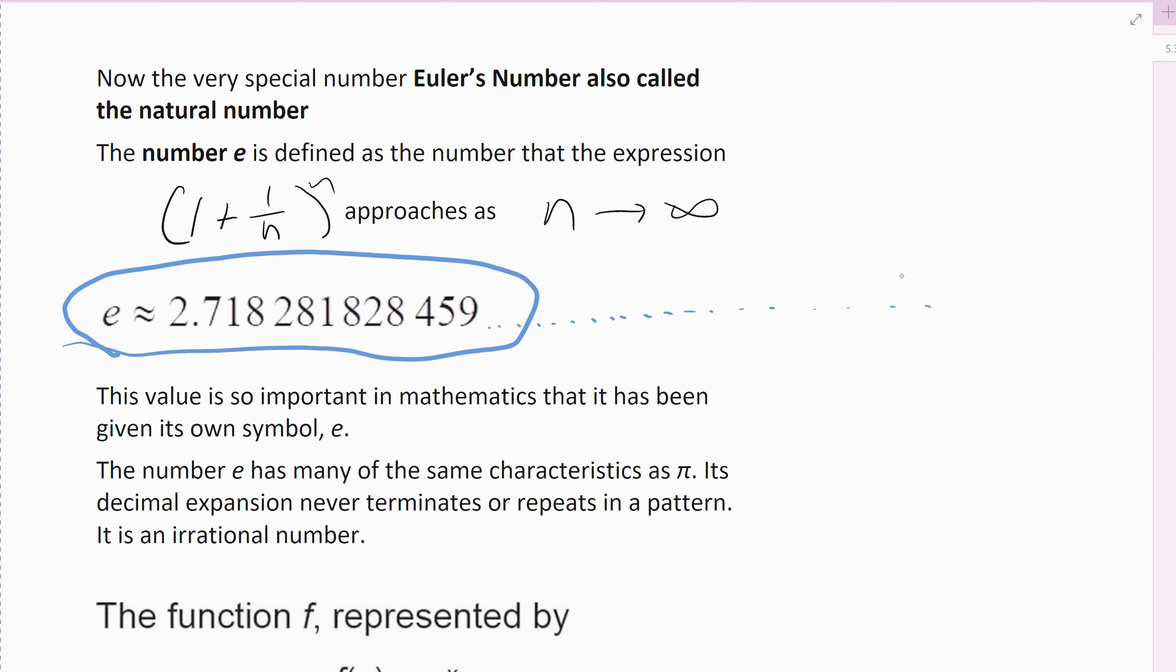The natural number E has to do with exponential growth, exponential decay. A lot of things grow exponentially, a lot of things decay exponentially, so it occurs in nature. It's very important and again, like I said, it has many of the same characteristics as pi. It's an irrational number, that's a decimal that goes on forever.